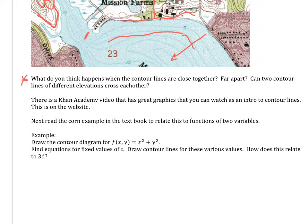So with these three questions here, I've kind of already answered them. If they're close together, then we're going up or down a hill very quickly. If they're far apart, it's more gradual. Can two contour lines of different elevations cross each other? The answer is definitely not.